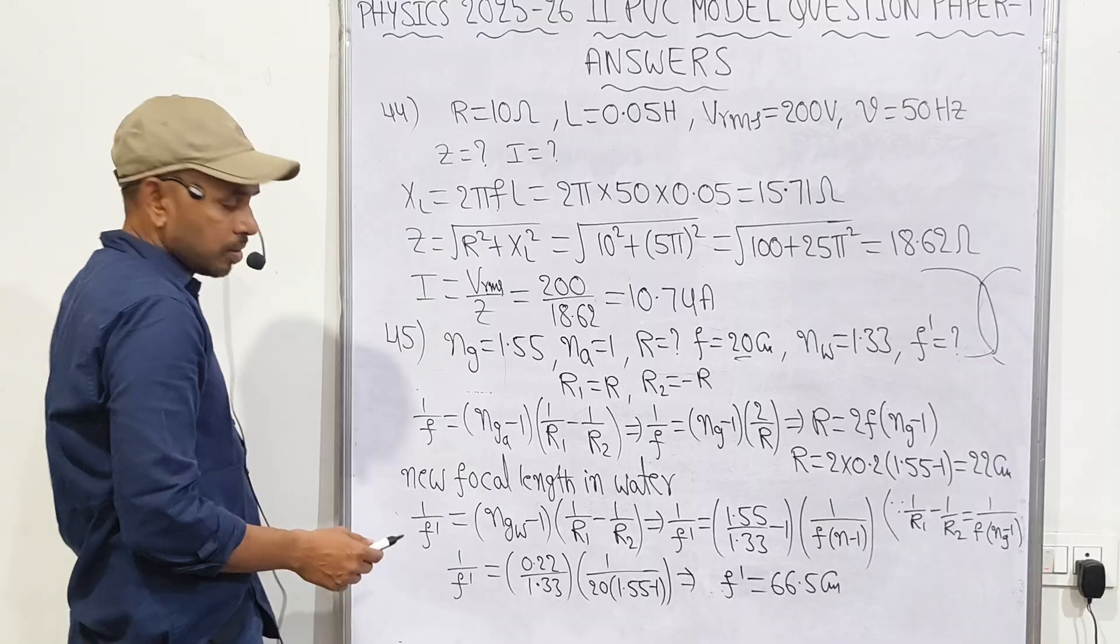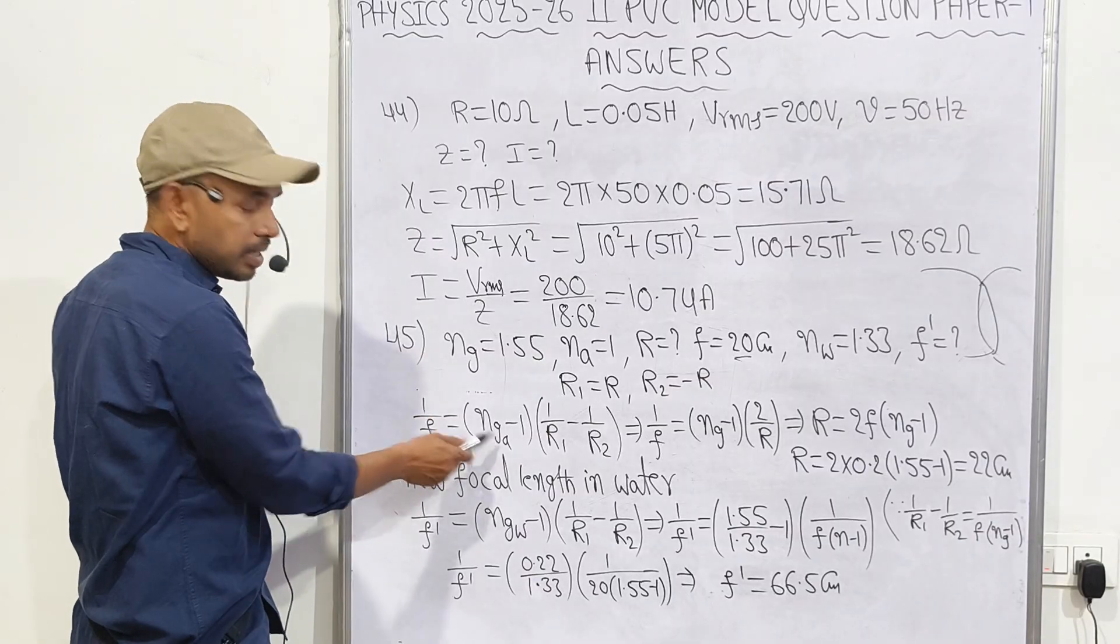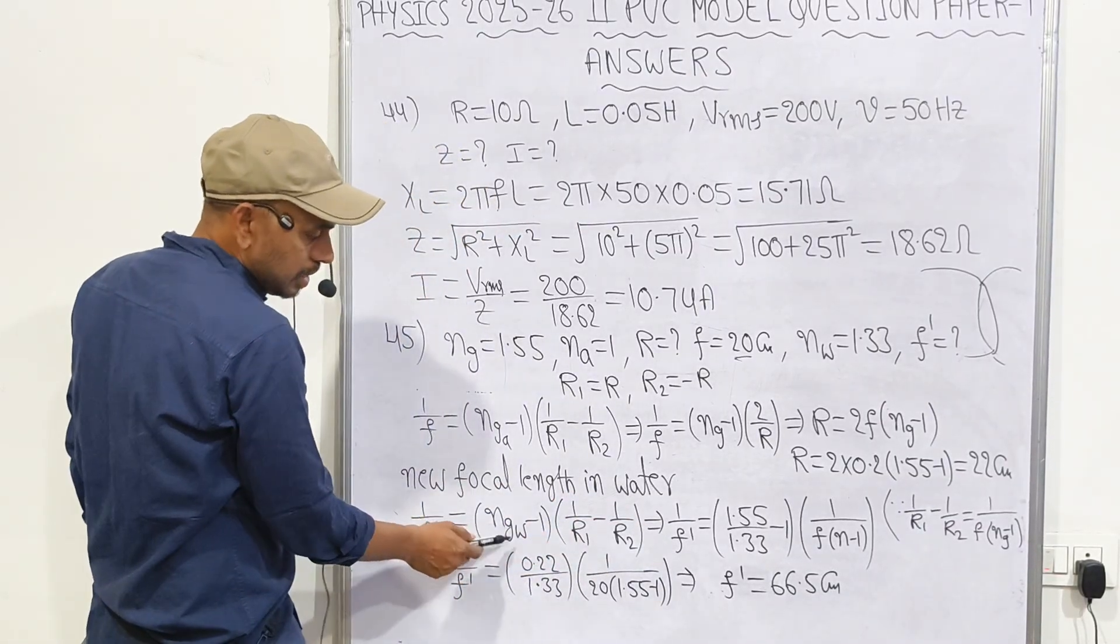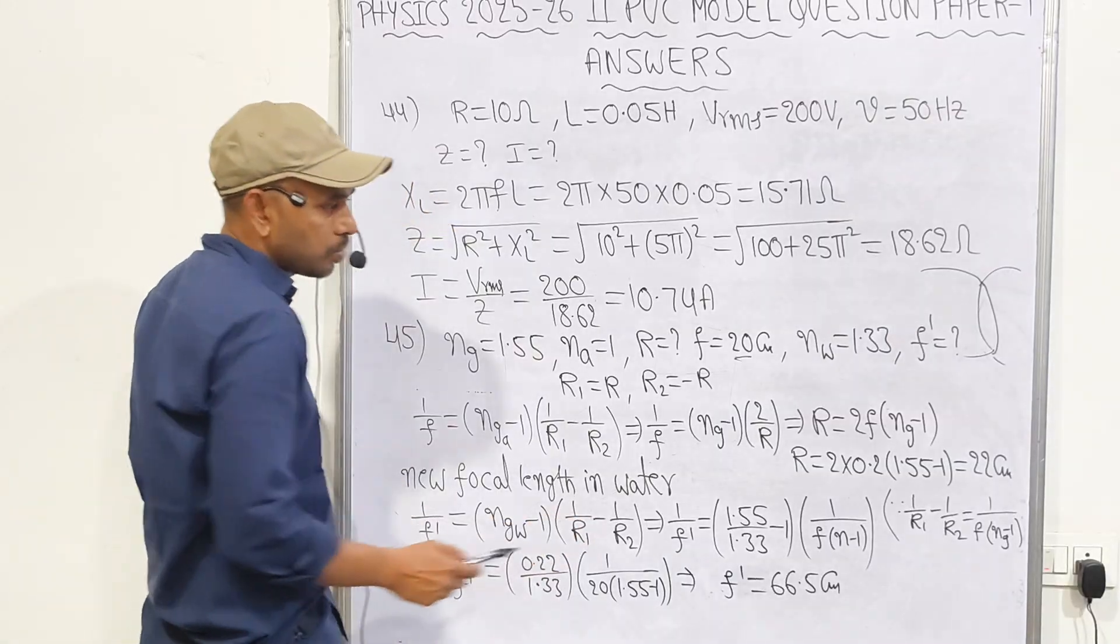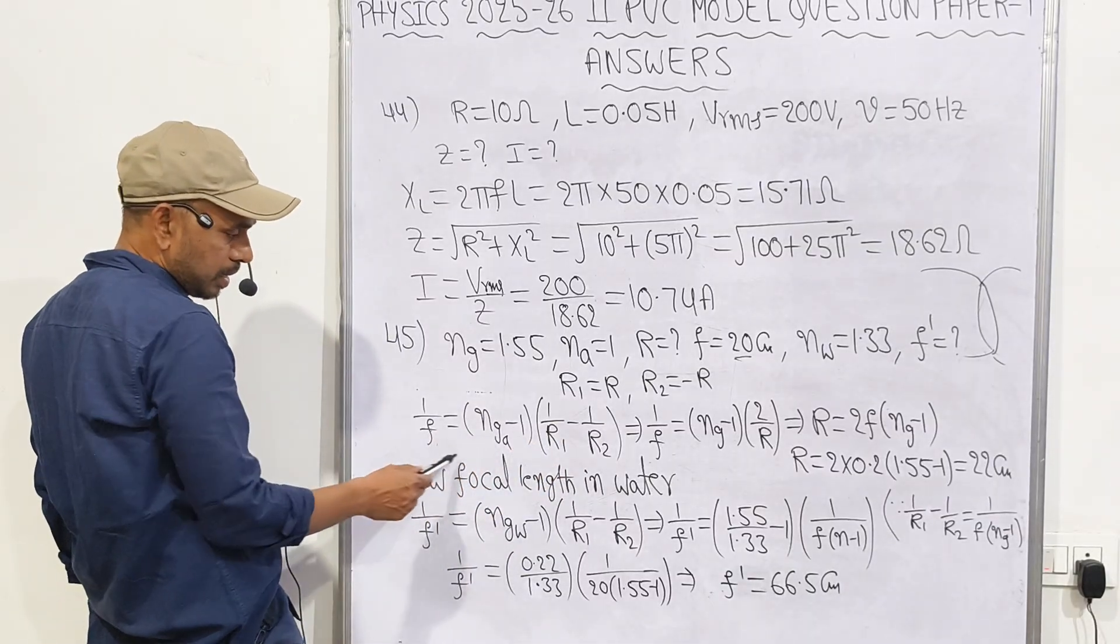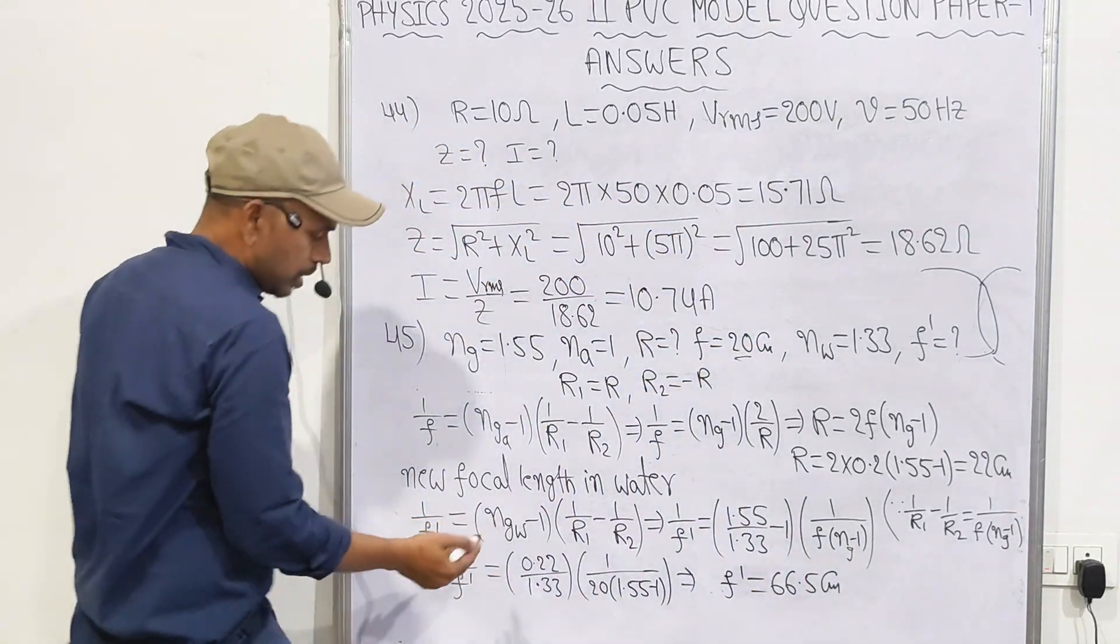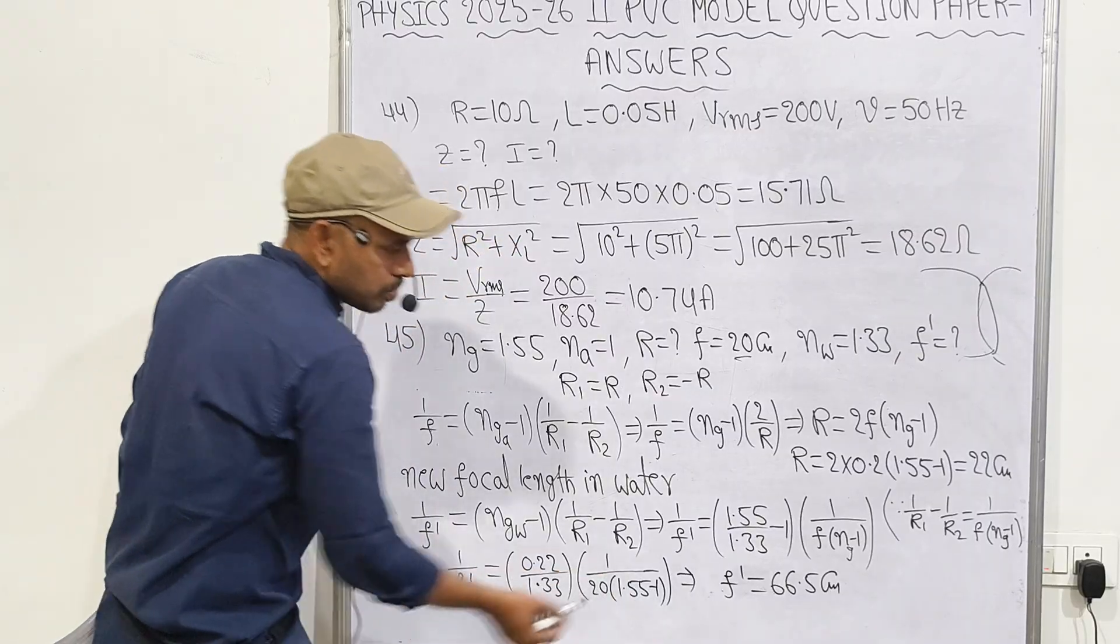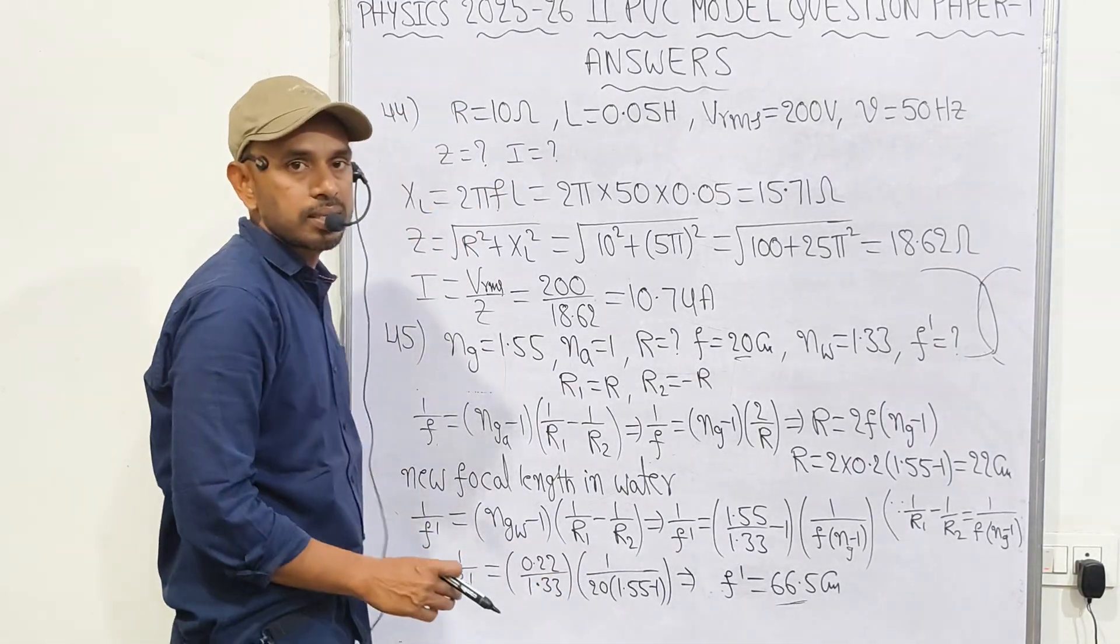New focal length in water: the lens is immersed in water. Refractive index of glass with respect to water, NGW. Same formula: 1 by F dash equals NG by NW minus 1 times (1 by R1 minus 1 by R2). We can write 1 by F equals NG minus 1, so substituted. Then 1 by F dash, this simplification done: 1 by 20 times NG minus 1. After simplification we get 66.5 centimeter. Reciprocal it, after doing calculation we get the answer.